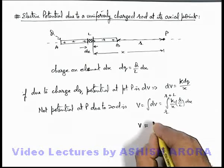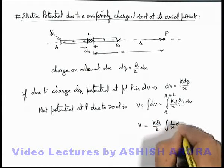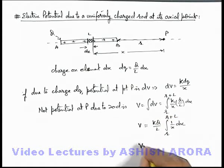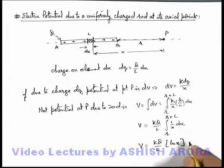So the potential here we are getting is k q by l, integration of one by x dx from r to r plus l. And the value of one by x integration we write as ln of x, and if we substitute the limits from r to r plus l.